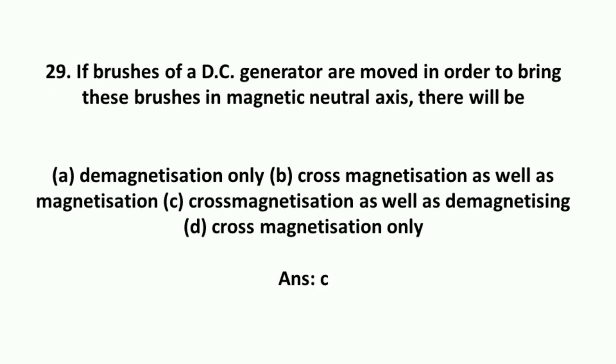If brushes of a DC generator are moved in order to bring these brushes in magnetic neutral axis, there will be cross-magnetization as well as demagnetization.